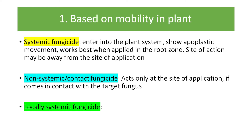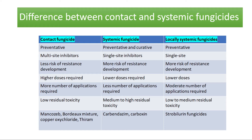The contact fungicide does not enter into the plant. Commonly used contact fungicides include mancozeb and copper oxychloride. Another type of fungicide based on mobility is the locally systemic fungicide. Strobilurin fungicides are basically locally systemic fungicides — they are recently developed and show locally systemic action.